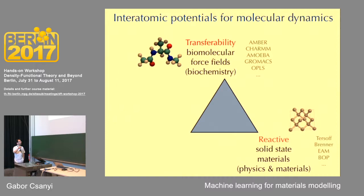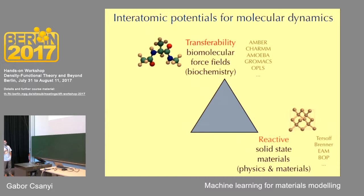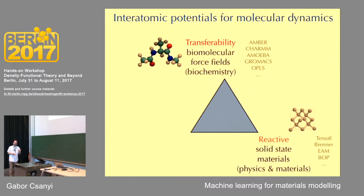That's in contrast to materials models, which need to be reactive. Models for solid-state systems like carbon, silicon, and metals — you want to break bonds. In biomolecular force fields you can do a lot of science without breaking bonds, but here it's all about breaking bonds: determining melting points, surfaces, reconstructions, motion of dislocations and point defects. Examples include Tersoff-Brenner and EAM. These potentials are reactive naturally, but they're not very accurate — the forces and energies are very far from DFT or reality.